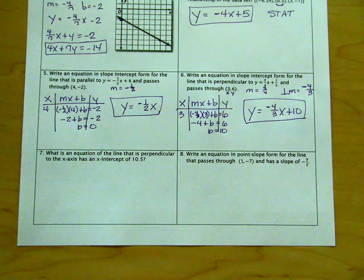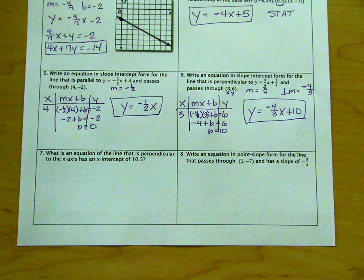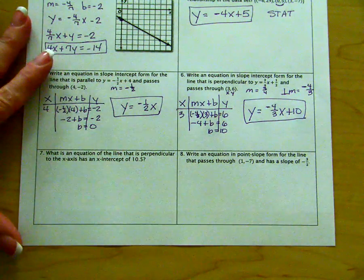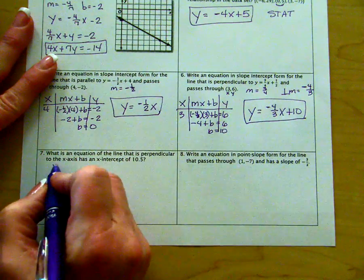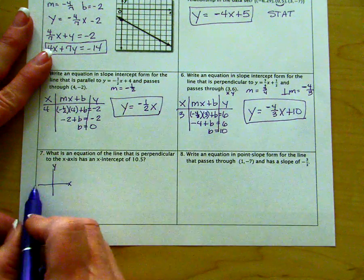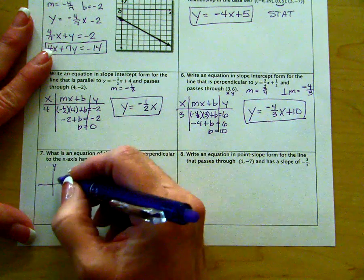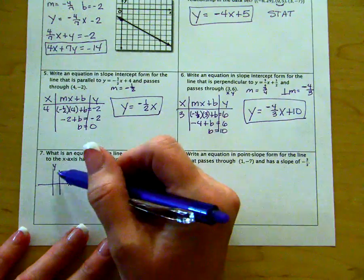For problem number seven, they want to know the equation of a line that is perpendicular to the x-axis and has an x-intercept of 10.5. So here I'm going to draw a set of axes.